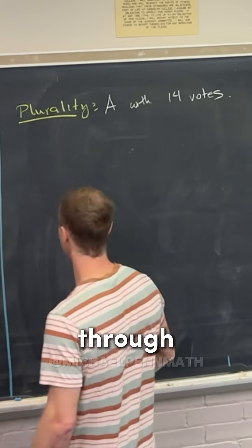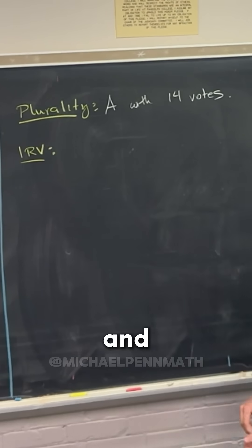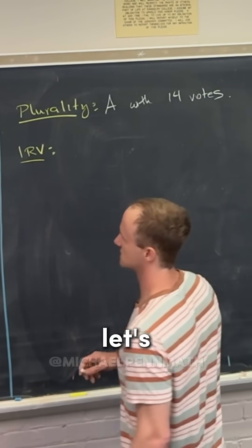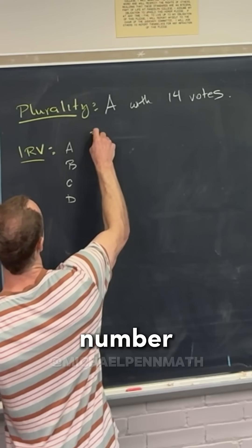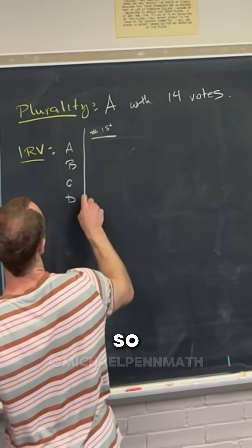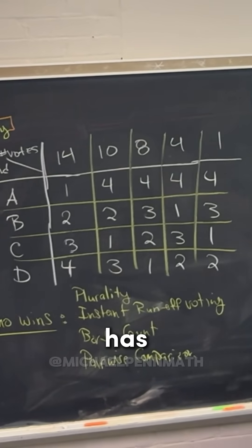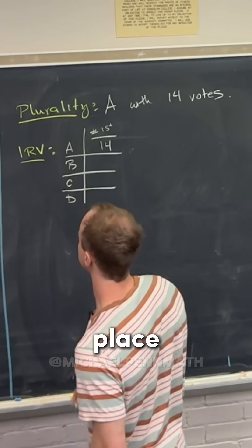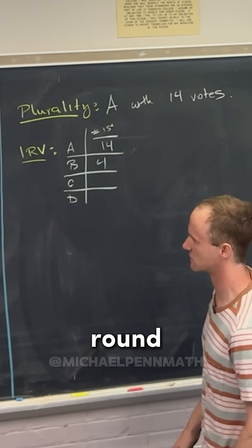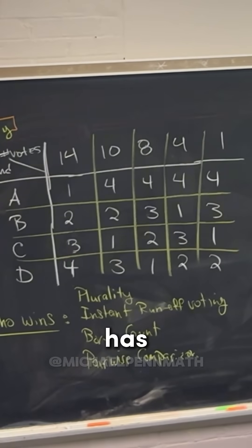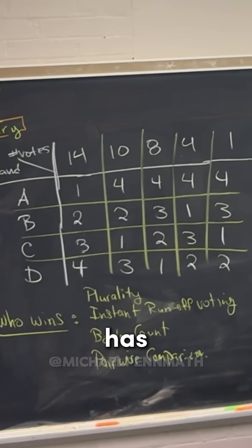So now let's go through an instant runoff voting scenario here. We'll have A, B, C, D, and then number of first place votes. So this will be round one. A has 14 first place votes in round one and B has four first place votes in round one. And then C has how many? 11. Yep, 11. And then D has eight.